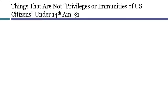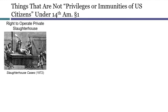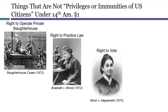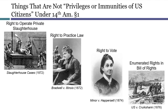In the 1870s, just a few years after the 14th Amendment was ratified, the Supreme Court held that almost nothing would count as a privilege or immunity protected by the new Privileges or Immunities Clause. For example, the clause would not require the states to honor the right to operate a private slaughtering business, the right to practice law, the right to vote, or virtually any of the rights described in the Bill of Rights, including the right to peacefully assemble and the right to keep and bear arms. The Privileges or Immunities Clause of the 14th Amendment has not played any significant role in modern constitutional law.